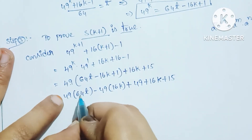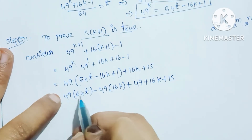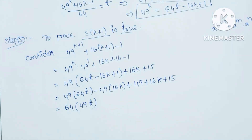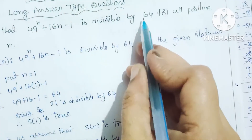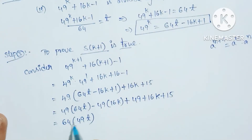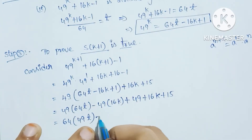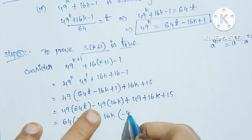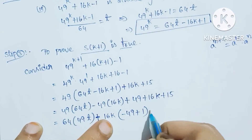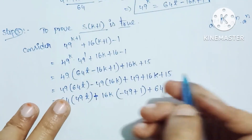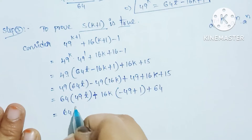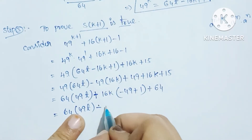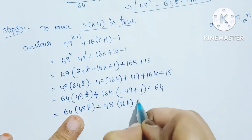There are three terms. The first and last terms contain 64 as a factor. We can factor: 4 times 16 multiplied gives 64. So we write 64 into 49t, then minus 49 times 16k plus 16k — combining these gives minus 48 times 16k — plus 64. Now minus 49 plus 1 equals minus 48, so we have minus 48 times 16k plus 64.